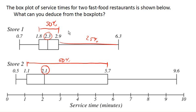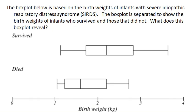Let's look at another case. The box plot here shows the birth weight of infants with severe idiopathic respiratory distress syndrome. The box plot is separated to show the birth weight of infants who survived versus those that did not. So what can we deduce from these box plots?